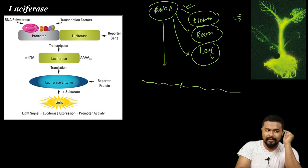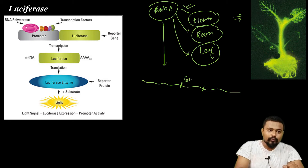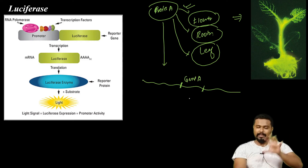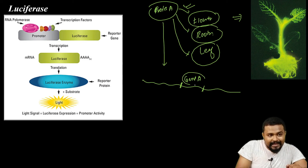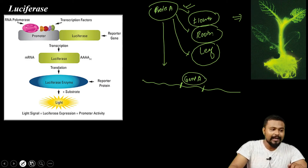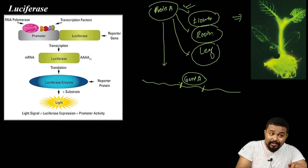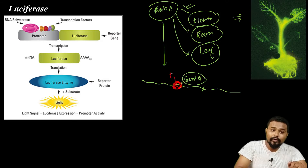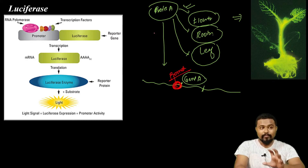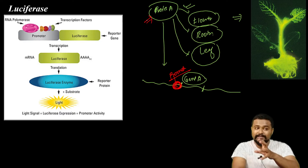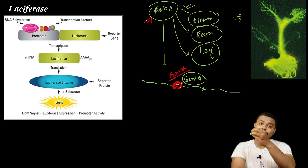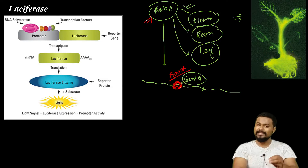This is Protein A. This is a promoter. In our eukaryotic cell there is a promoter. We have Protein A expression: Protein A in flower expression, root expression, and leaf expression.